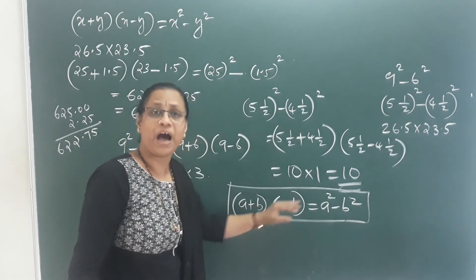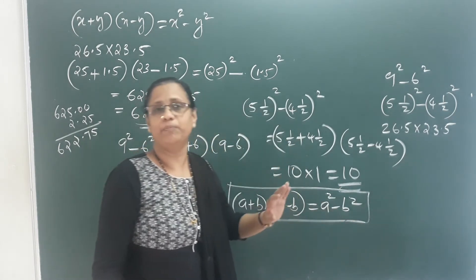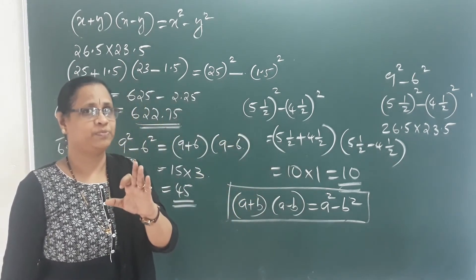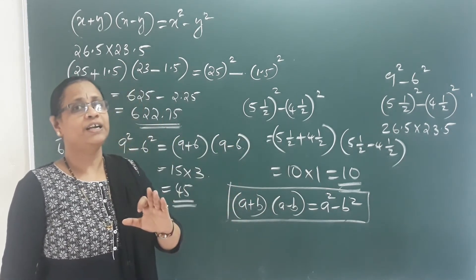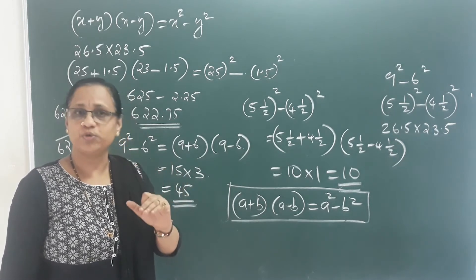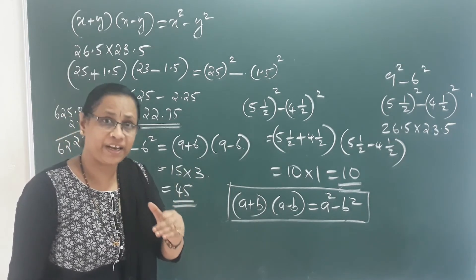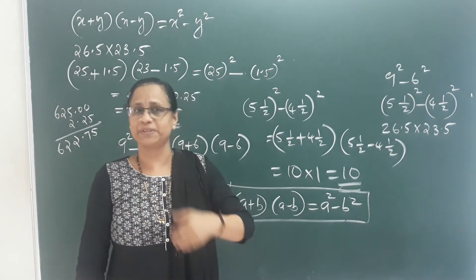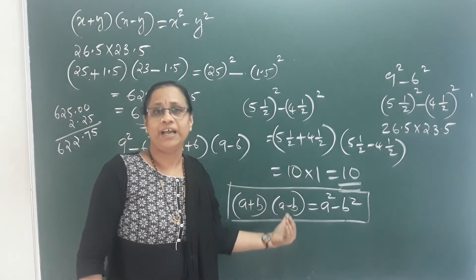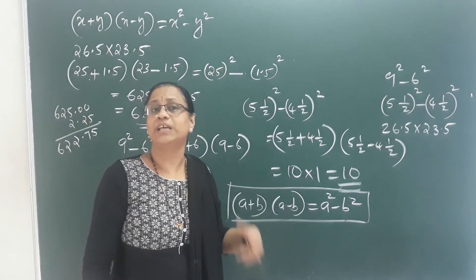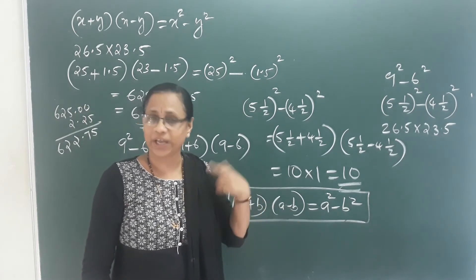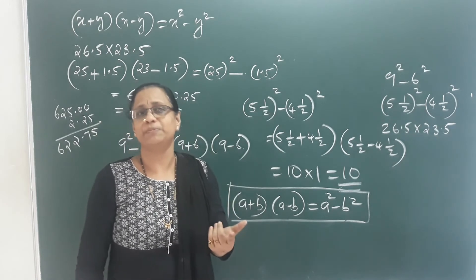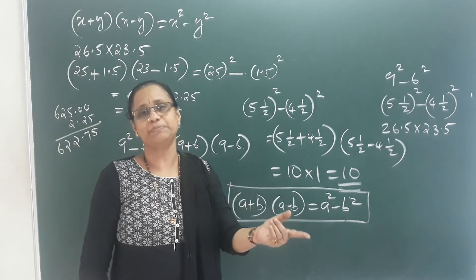This is LHS and RHS — very important. Now we have to learn three properties. First: a plus b whole square equals a square plus 2ab plus b square. Second: a minus b whole square equals a square minus 2ab plus b square. Third: a square minus b square equals a plus b into a minus b.